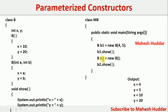When creating B2 without passing any parameter, the default constructor is called. The value of X is initialized to 10 and the value of Y is initialized to 20. When you call B2.show, the values 10 and 20 are displayed for X and Y respectively.